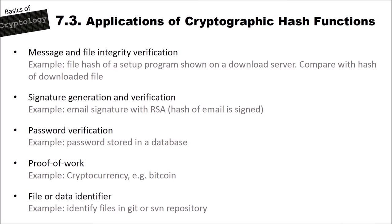Another application for cryptographic hash functions is proof of work — for example, cryptocurrency like Bitcoin. Proof of work means you find a hash value with specific properties, for instance with a certain pattern or number of zeros at the beginning. This is computationally hard, and finding it proves you spent computational work. Our last application is file or data identifiers — for example, identification of files in Git or SVN repositories, where files are also identified using cryptographic hash functions.